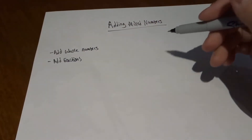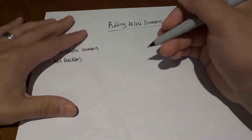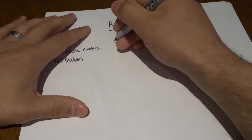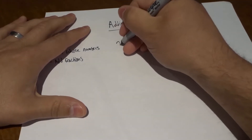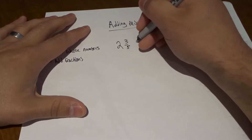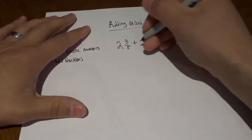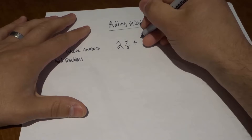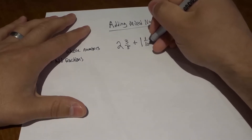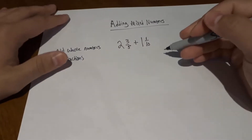Now let's go over an example and let me show you how it's done. The first one is going to be two and three-fifths, and then we are adding that together with another mixed number, something like one and one-tenth. So we have two mixed numbers right here that we're going to add together.